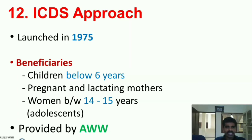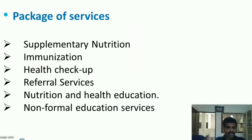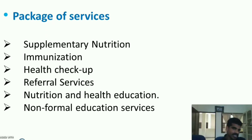The 12th approach is ICDS — Integrated Child Development Scheme — launched in 1975. Beneficiaries include children below 6 years, pregnant and lactating mothers, and women between 14 to 15 years (adolescents). Services are provided by Anganwadi workers through Anganwadis. The package of services includes supplementary nutrition, immunization, health check-up, referral services, nutrition and health education, and non-formal education services to children.